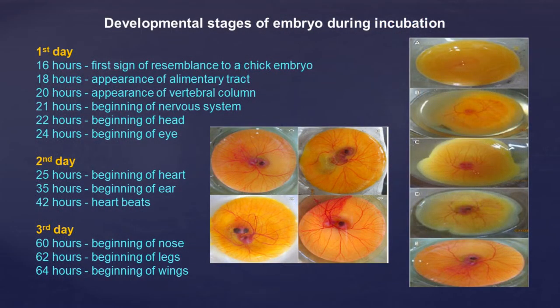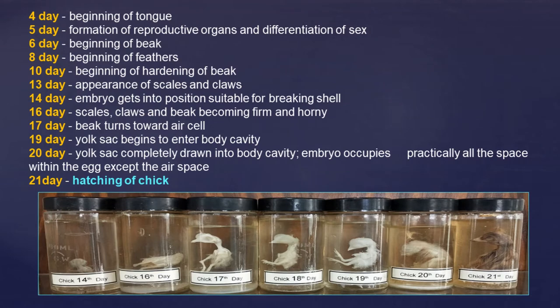Next, we shall glance through the developmental stages of the embryo during incubation. On the first day at 16 hours, the first sign of resemblance of a chick embryo. Second day, 25 hours, beginning of heart. Third day, 60 hours, beginning of nose. Fourth day, beginning of tongue. Tenth day, beginning of hardening of beak. Seventeenth day, beak turns towards the air cell. And on the 21st day, hatching of chick.